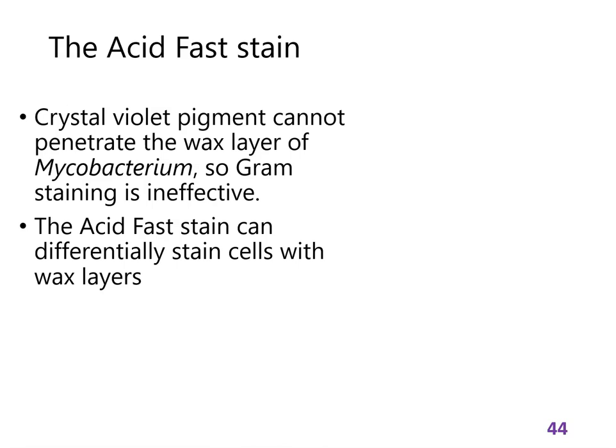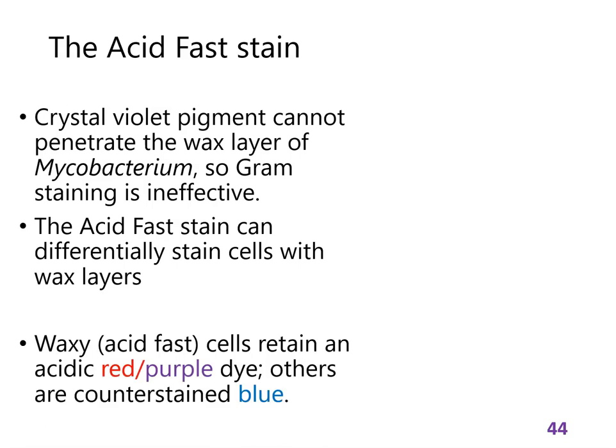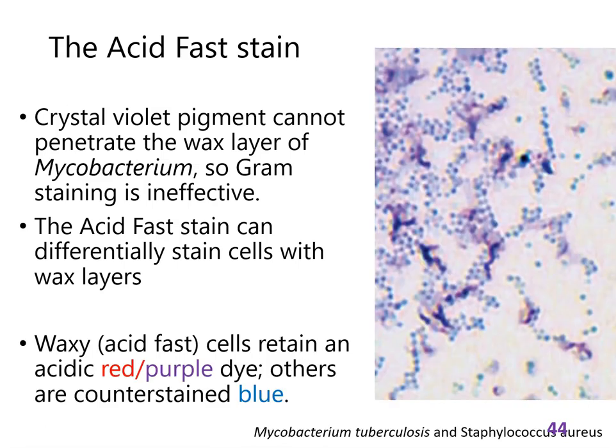With the gram stain, crystal violet sticks to the peptidoglycan of gram positives. You put ethanol on, it removes the crystal violet from gram negatives so they become invisible, and then safranin makes them visible. It's just the colors are different. Acid fast cells are kind of reddish purple — these, I think, are Mycobacterium tuberculosis — and all the other ones would be counter-stained with methylene blue, so they are blue. That's acid fast stain.